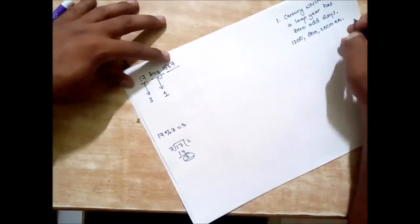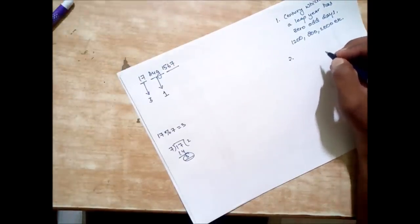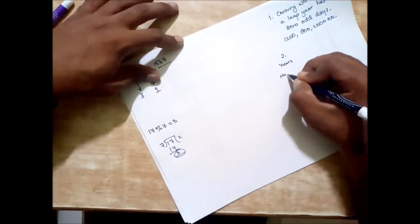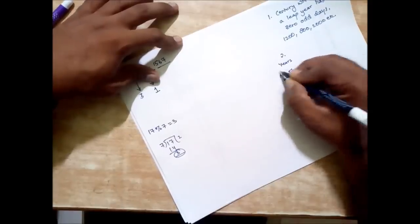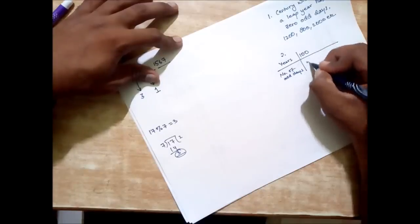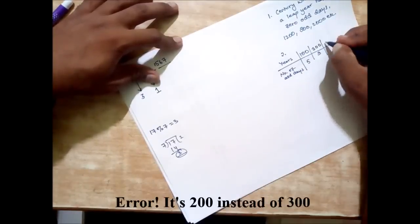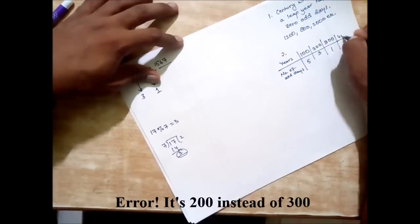Number two: suppose we create a table - years and number of odd days. So this table you need to learn: in 100 years there are 5 odd days, in 200 years there are 3 odd days, in 300 years there is 1 odd day, and in 400 years there is 0.